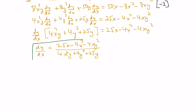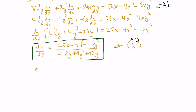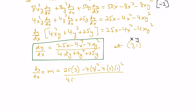This derivative represents the slope of the tangent line at any point on the curve. At the point (3,1), x = 3 and y = 1, so we substitute these values into our equation. The slope m = (25·3 − 4·3³ − 4·3·1²) / (4·3²·1 + 4·1³ + 25·1).